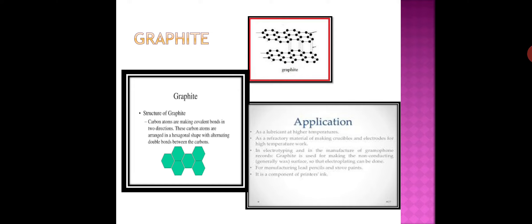Graphite does not dissolve in most solvents. Uses of graphite: graphite is used in making lubricants, carbon electrodes, and in pencils for writing. Graphite is also used in paints, polish, and in arc lamps which give a bright light.